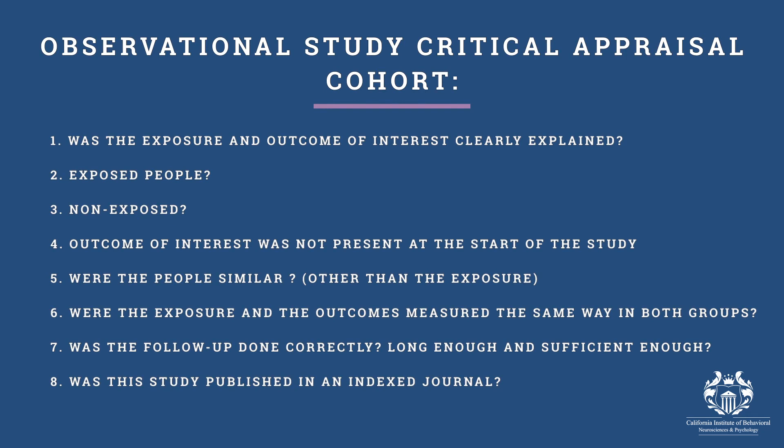For cohort studies, here are the eight questions. Number one: was the exposure and the outcome of interest clearly explained — did the authors explain what the exposure is and what outcome they are studying? Number two: did they clearly mention the exposed people in that particular location? Number three: did they mention that there were non-exposed people as well for comparison?